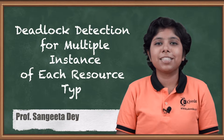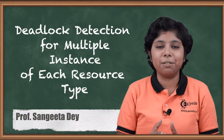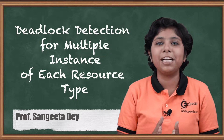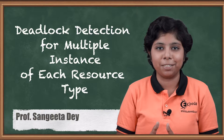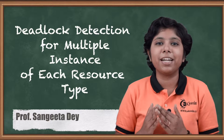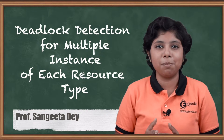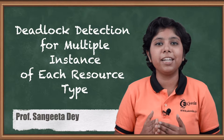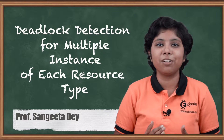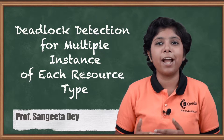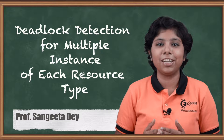Hello friends, today we will discuss a deadlock detection and recovery algorithm that is applicable for multiple instances of each resource type in a resource allocation system. We will cover how to implement that algorithm using banker's algorithm similarity, the detection usage factors on which detection depends, and the advantages and disadvantages of using that detection algorithm.